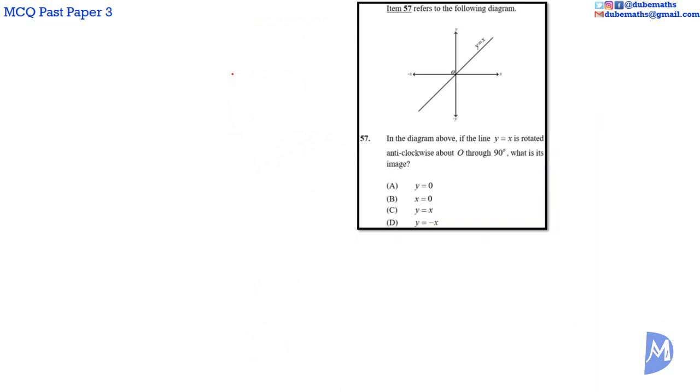Question 57. If the line Y equals X is rotated anticlockwise about the origin 90 degrees, the image will be this line. That line is not Y equals 0. Y equals 0 is the X axis. It's not X equals 0. X equals 0 is the Y axis.